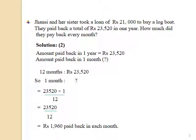So, let's solve question number 2. 12 months = Rs. 23,520. Therefore, 1 month, how much? 23,520 multiplied by 1 divided by 12 is equal to Rs. 1,960 in each month. Therefore, they paid back Rs. 1,960 in each month.